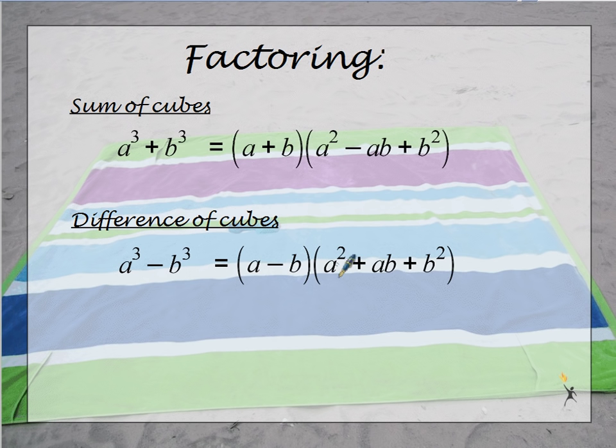They both start with a, then b, then a squared, then a times b, then b squared. The only thing that's different is a couple of signs. So when I have students that start to memorize these, they have a hard time at first remembering which signs go with which cubic binomial.